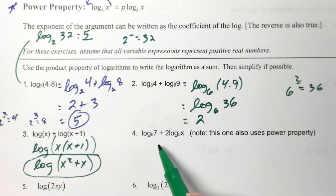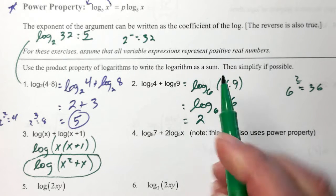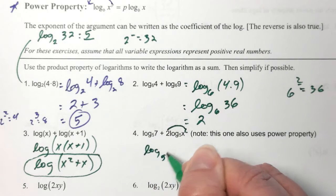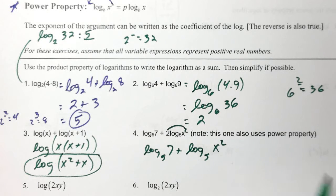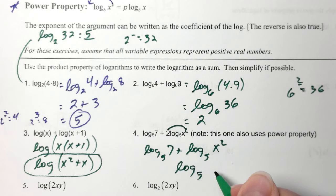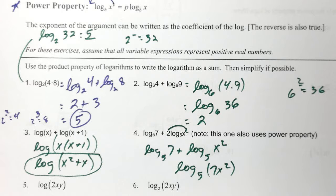Here we've got two logs added together, so we can multiply those arguments. Notice this one also uses the power property — there's a two here, so that exponent can be pulled up. Log base 5 of 7 plus log base 5 of x squared — the x squared is my argument. Now that I don't have any coefficients, I have two logs, so I can rewrite as a single log: log base 5 of (7x squared). I like to put that argument in parentheses to show it's not just the 7 but the entire 7x squared.